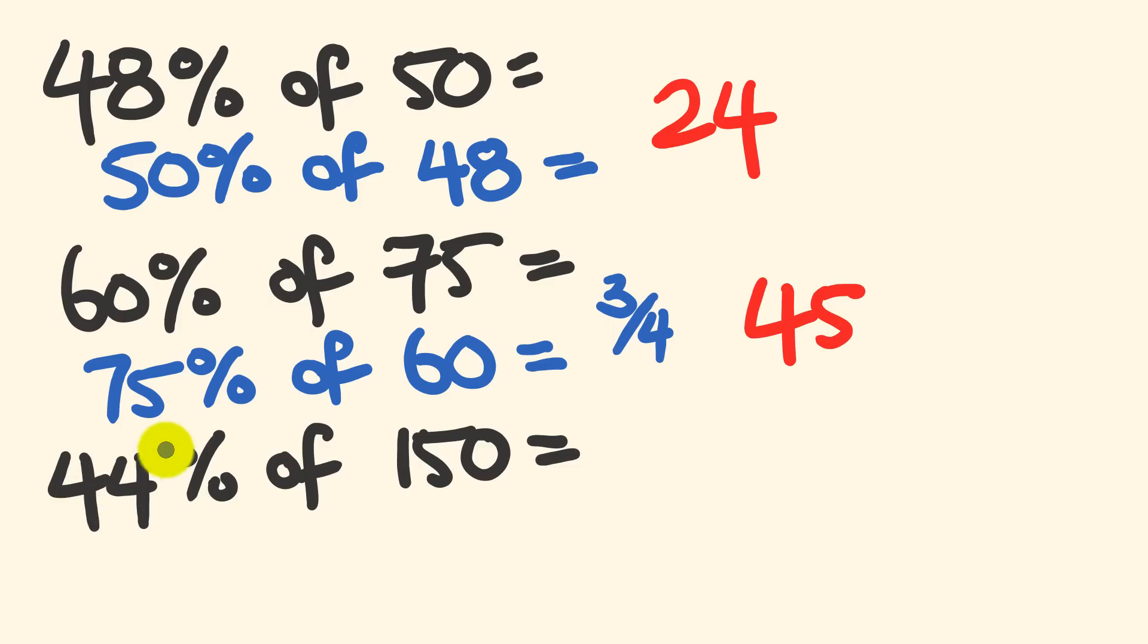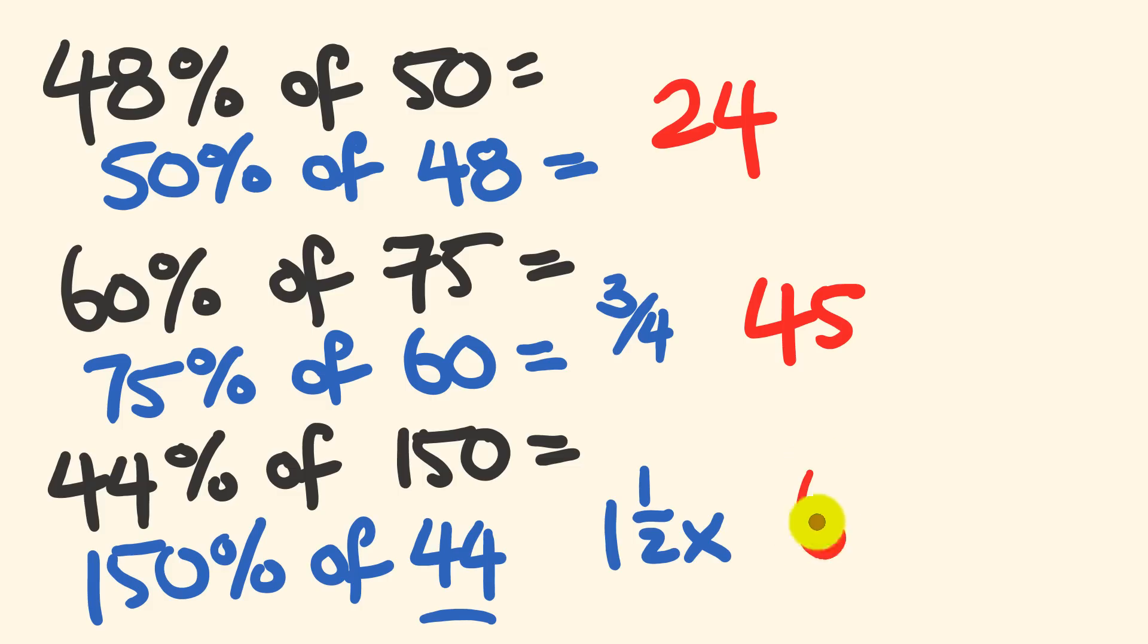Okay, lucky last, we have 44% of 150, which is the same as 150% of 44. Okay, so how do you do this? Well, 150%, this is one and a half times, okay? One and a half times as big. So what is one and a half times as big as 44? Well, half of 44 is 22. So one and a half times as big as 44, the answer is going to be 66.